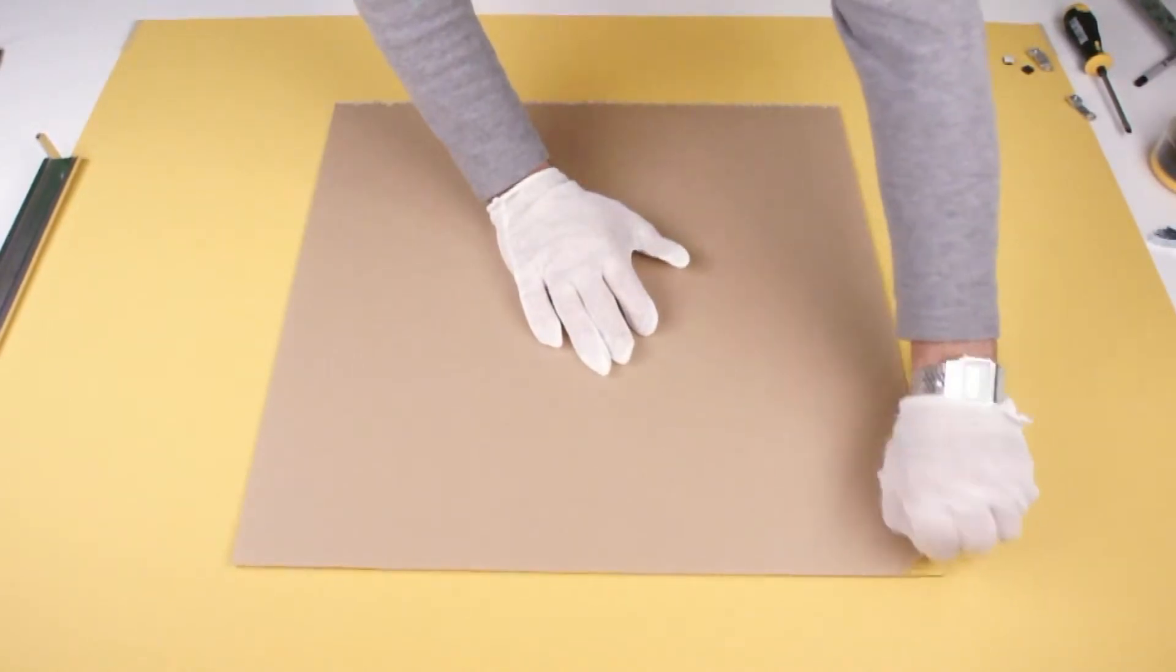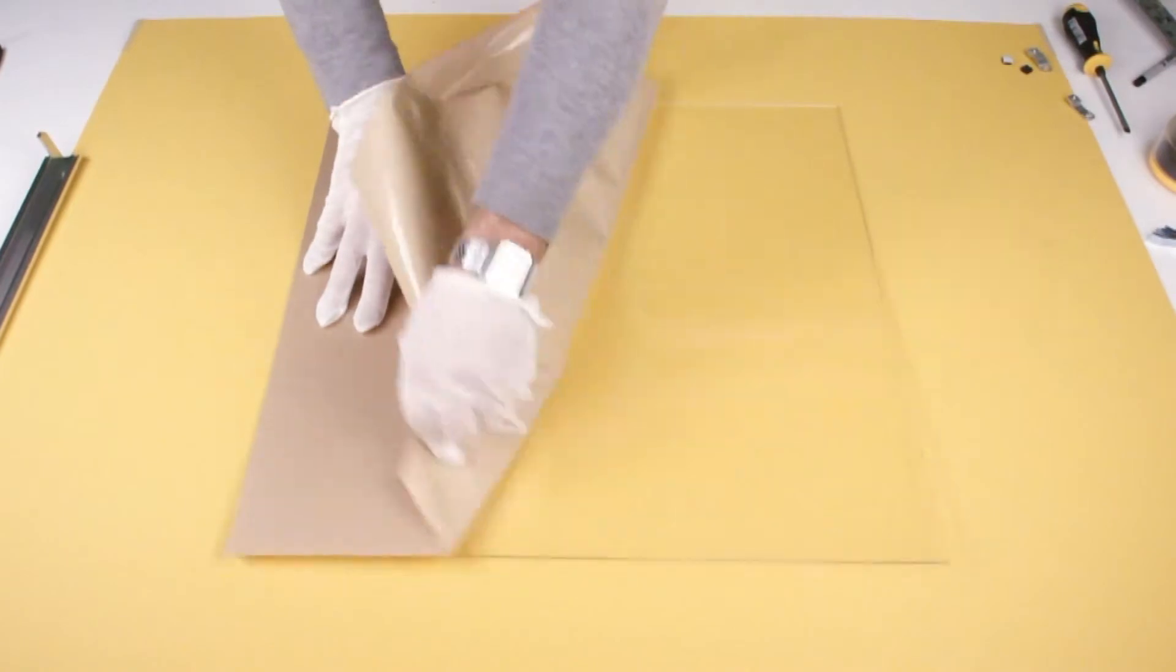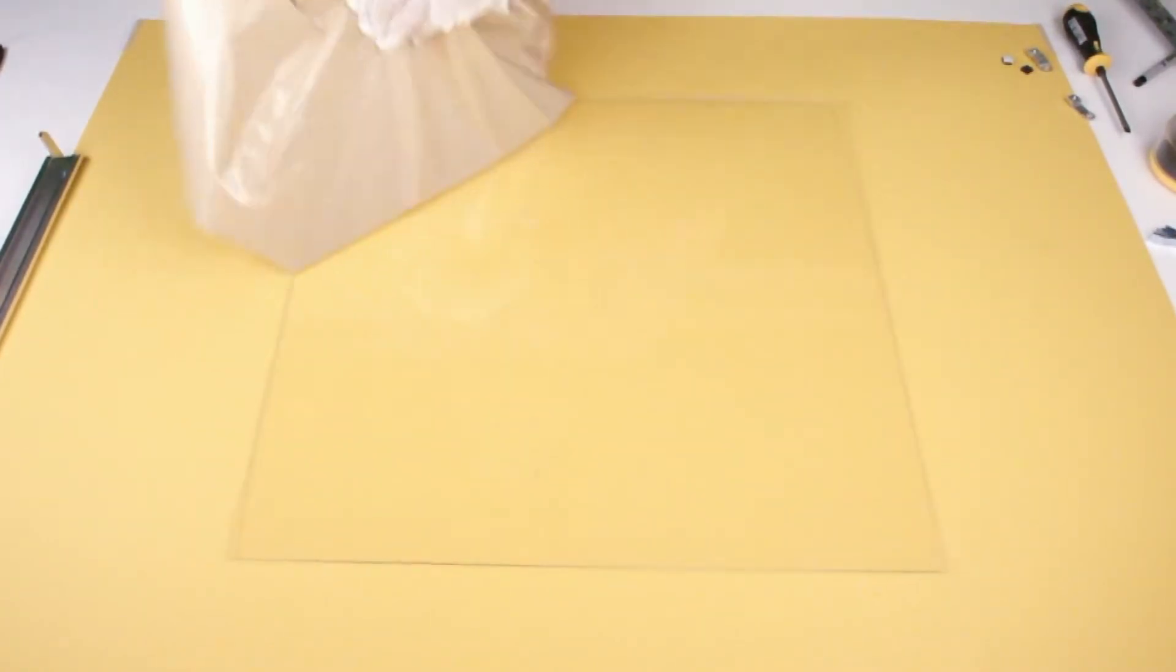Flip your Plexiglas over and proceed to peel the other side. And remember always, keep your hands on the protective paper until the end.